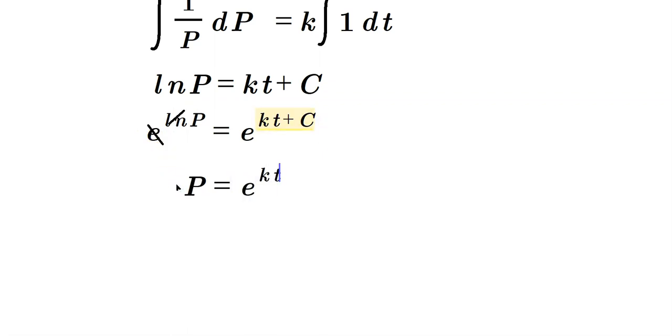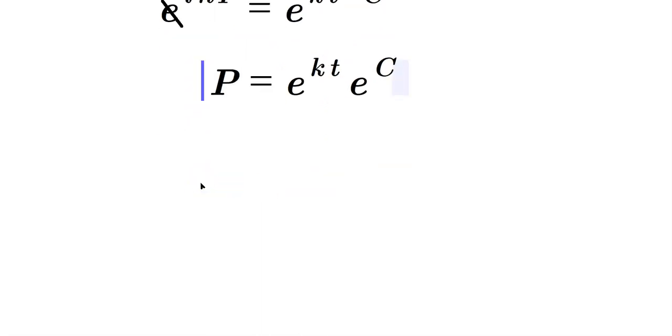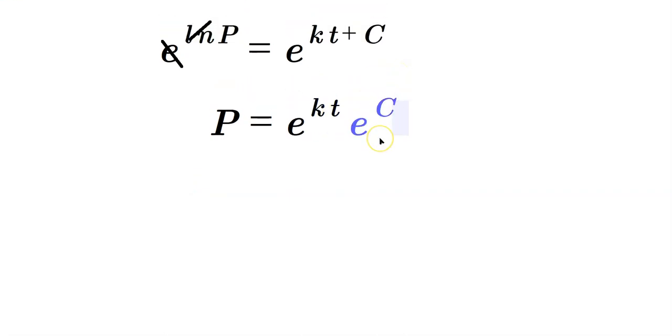Look what's happening on the right side here. I've broken this down into e to the kt times e to the C. This is allowed by the rules of exponents. But then e to the C is just a new constant. You can call it A, for example.